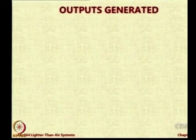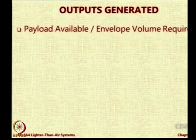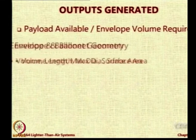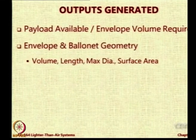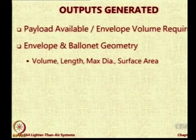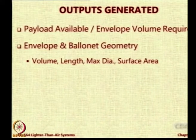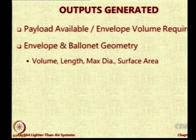Let us start now looking at what are the kind of outputs this methodology can give you. First of all, if you give it the envelope volume, it gives you the payload. If you give it the payload, it gives you the envelope volume. Then it also gives you the geometrical information for both the envelope and the ballonet. The typical parameters which you need are volume, length, max diameter, and surface area of the envelope and ballonet.